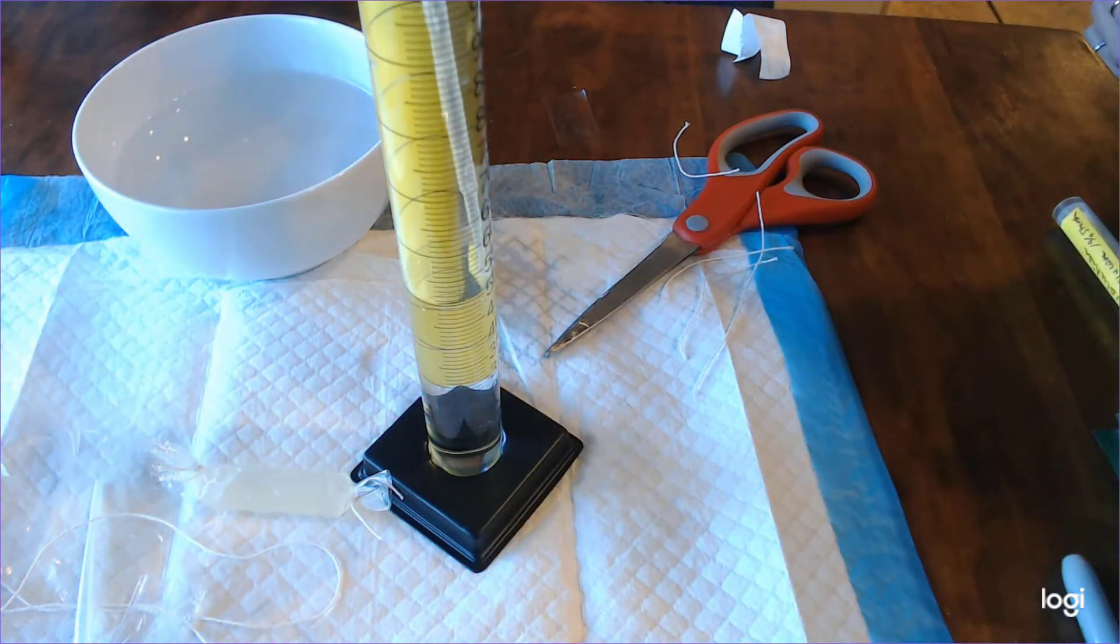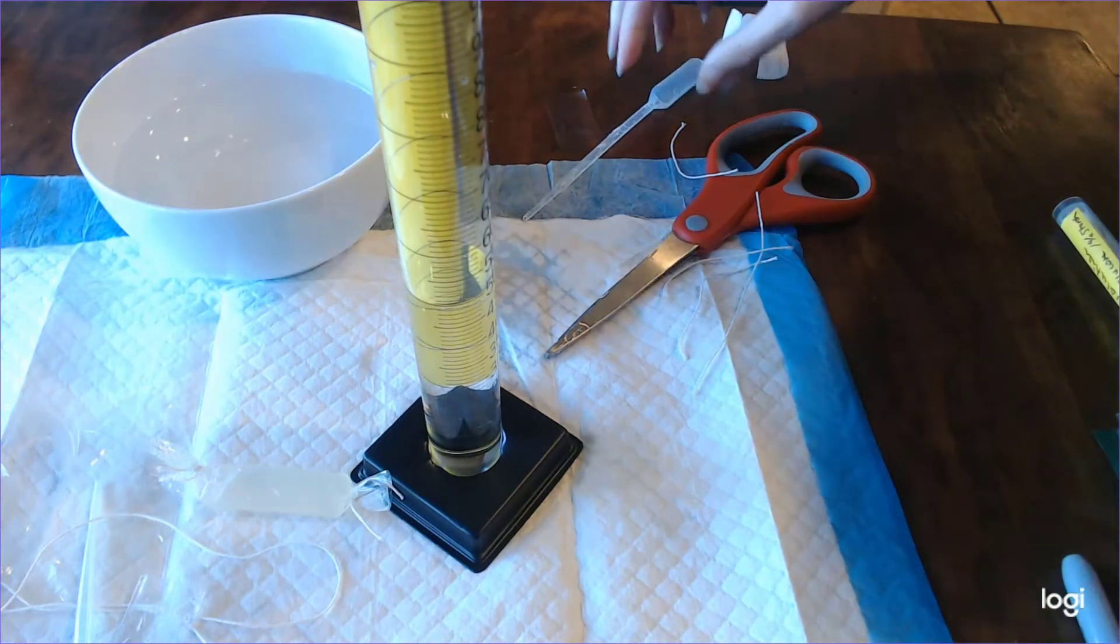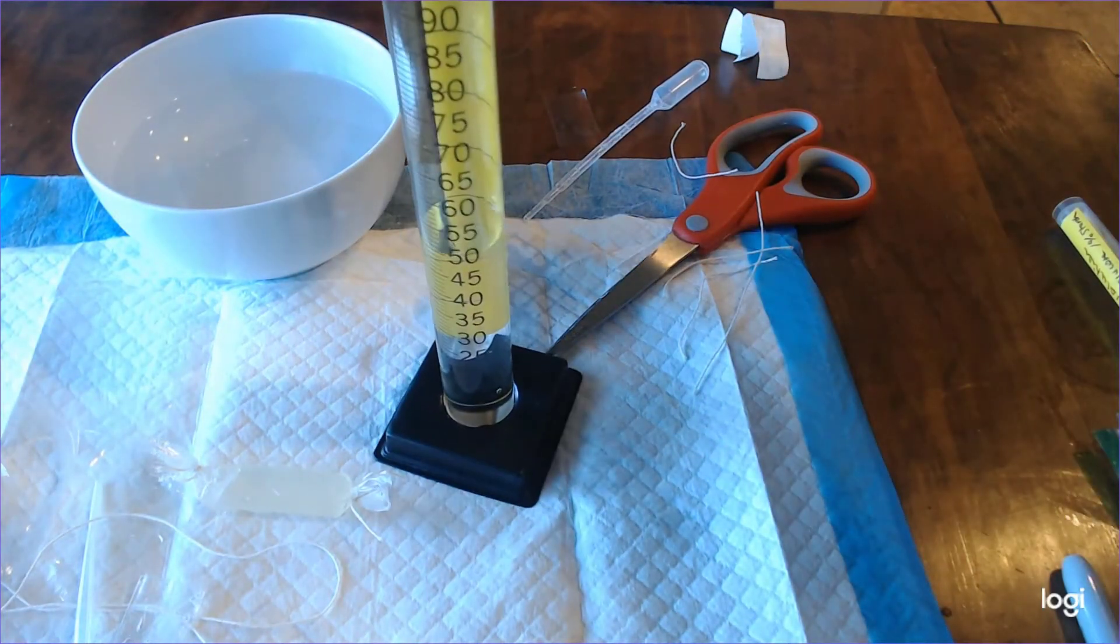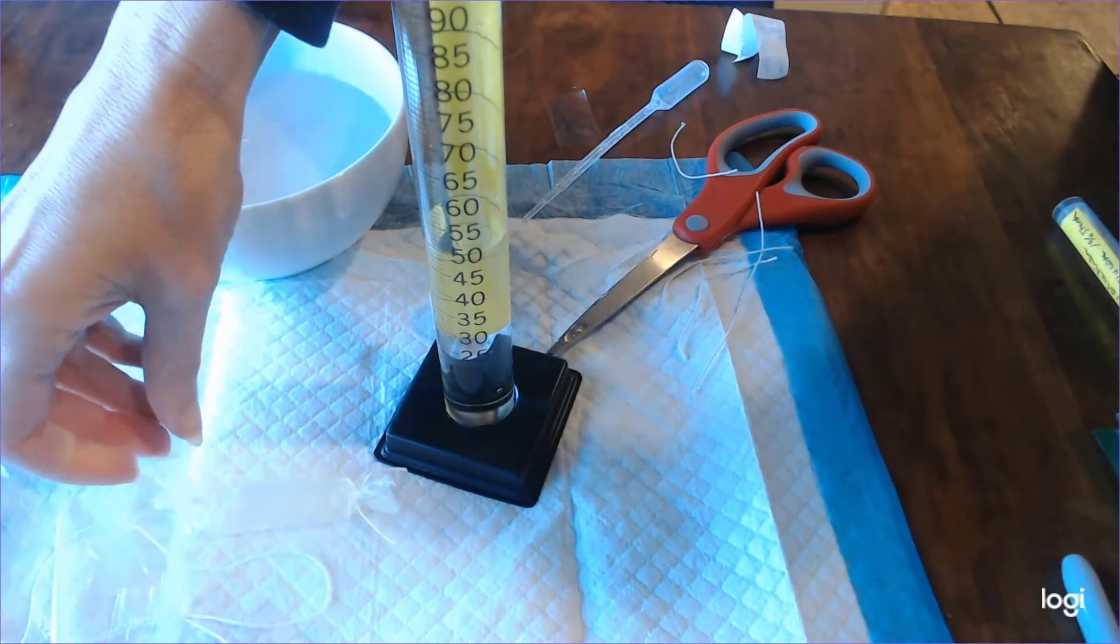To remove a little bit of the excess water so that I can get exactly 50 milliliters, I'm going to use my pipette. So now I'm at exactly 50 milliliters.